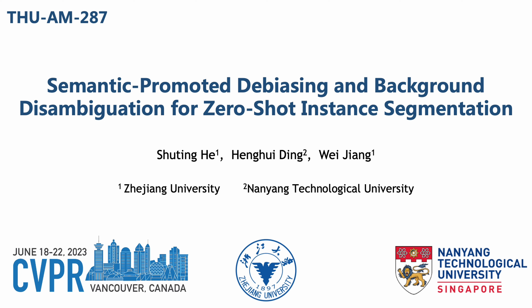First, I introduce what is zero-shot segmentation. Zero-shot segmentation aims to segment not only seen classes that have been seen in the training set, but also unseen classes with additional semantic information. As shown in the figure, seen classes contain person, baseball bat, fence, and so on. Unseen classes like frisbee do not appear in the training set, but we need to segment it. Conventional methods can segment seen classes only, but with zero-shot methods, we can segment both seen and unseen classes.